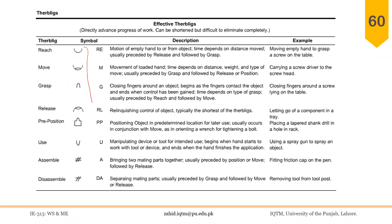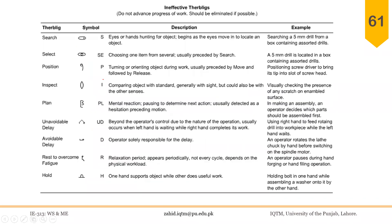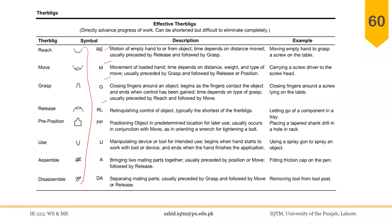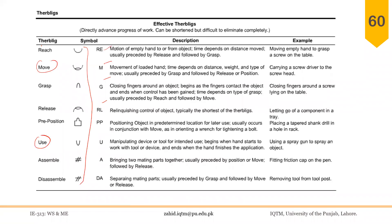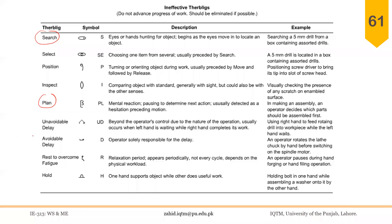Some therbligs are effective and some are ineffective. For example, use or move are effective therbligs, but search, plan, or delay are ineffective therbligs. We try to eliminate ineffective therbligs and reduce time for effective therbligs as a rule of thumb.